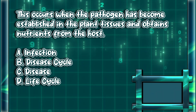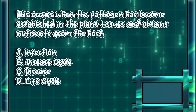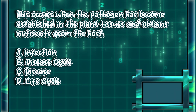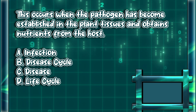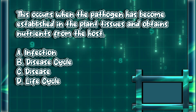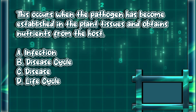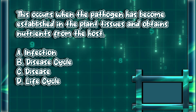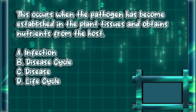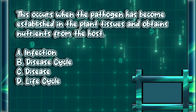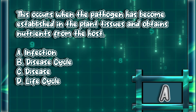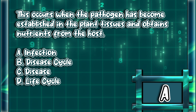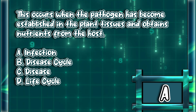This occurs when the pathogen has become established in the plant tissues and obtains nutrients from the host. A. Infection. B. Disease cycle. C. Disease. D. Life cycle. The answer is letter A.